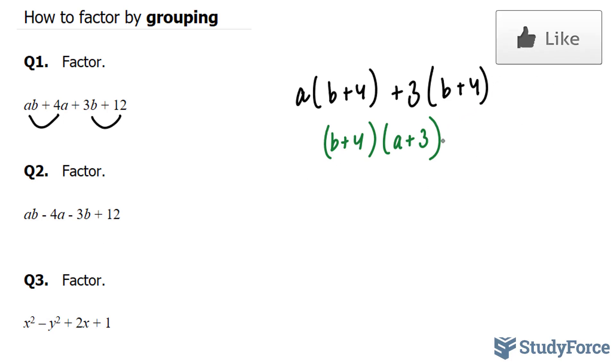In question number two, it looks very similar to one, except the signs are a bit different. Once again, both of these two terms have an A in common, and these two terms both have a 3 in common. So I'm going to factor out an A from the first two, leaving me with B minus 4.